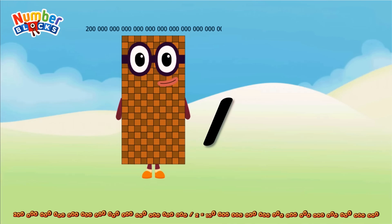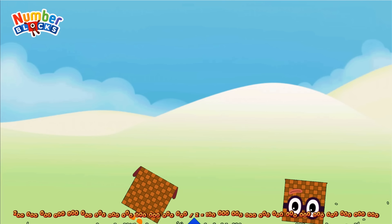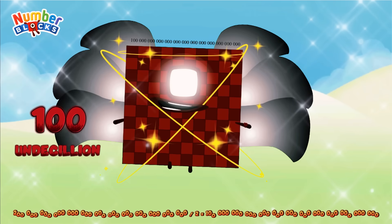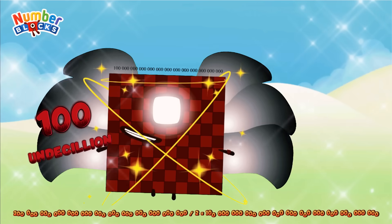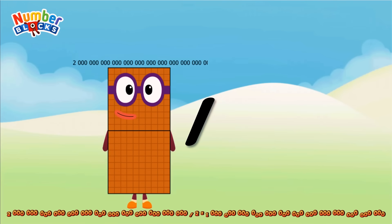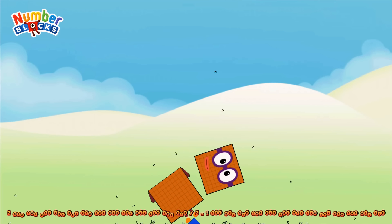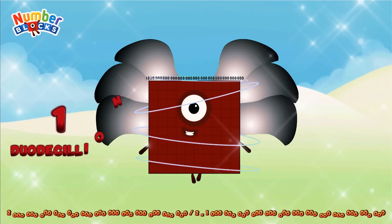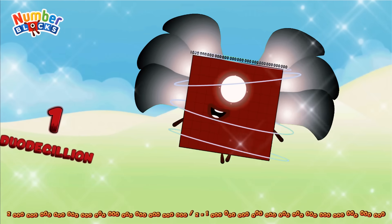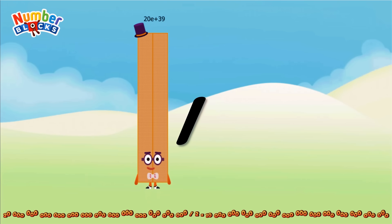200 undecillion divided by 2 equals 100 undecillion. 200 undecillion divided by 2 equals 100 undecillion. 20 undecillion divided by 2 equals 10 undecillion.